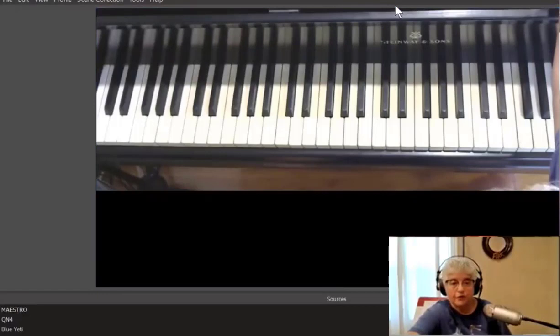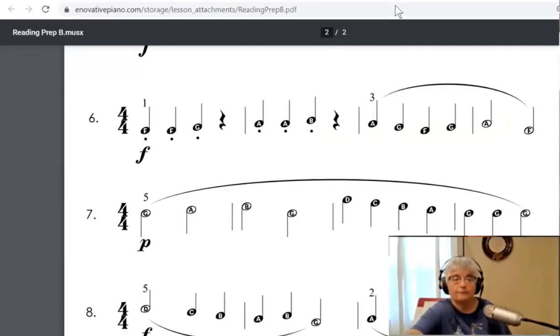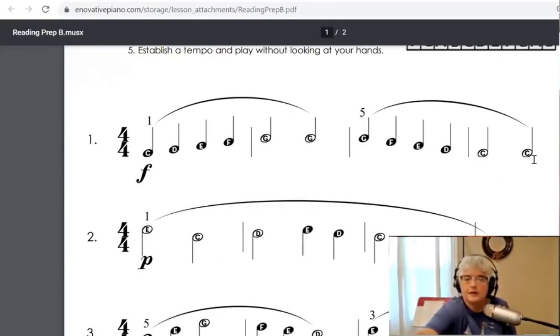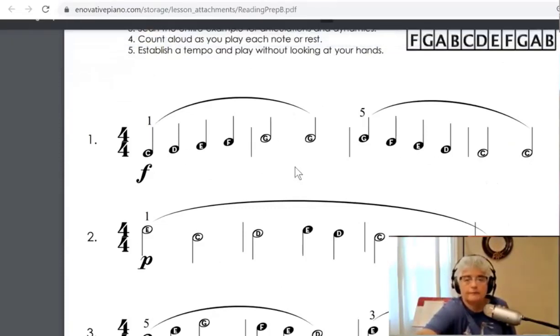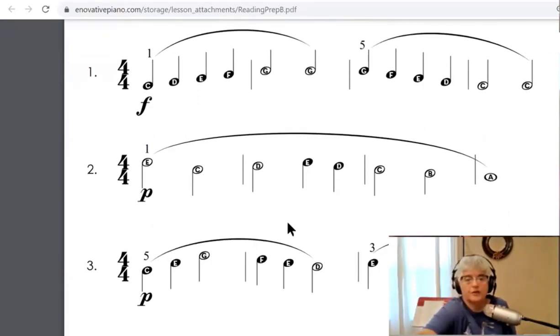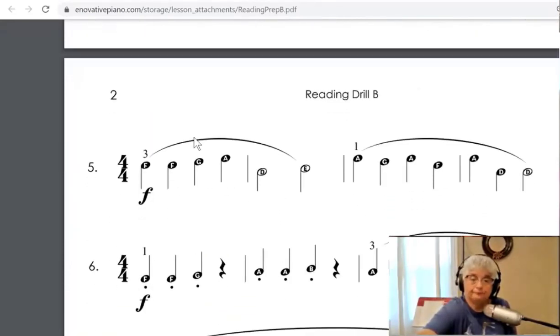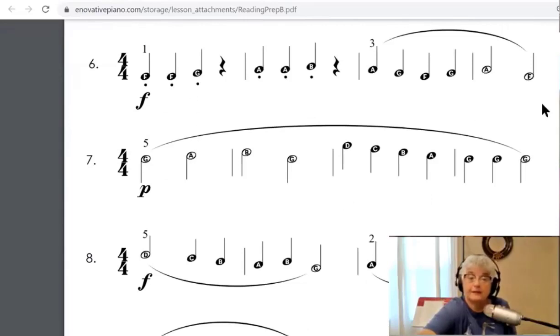Those are the three reading drills you're assigned and I'm going to go back and look at those again just real quick. So it was one, three, and six I think. So the first one is for the right hand and it's all legato and it starts on C. The second one is for the left hand and it's also all legato and it starts on C. The third one is for the right hand and it starts on F and it uses both articulations staccato and legato and it also uses rests.